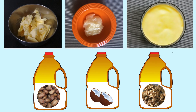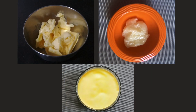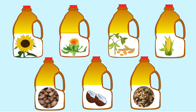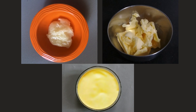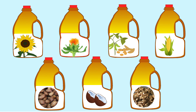Fats are categorized into two types as per their physical forms: solid fats and liquid fats. Ghee, butter and vanaspati are examples of solid fats. Cooking oils like sunflower oil, peanut oil etc. are examples of liquid fats.